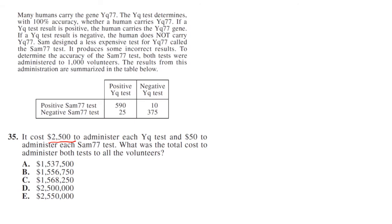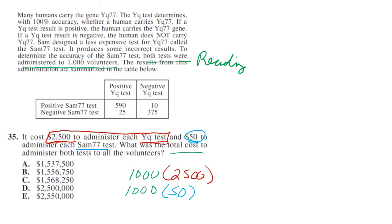It costs $2,500 to administer each YQ test and it costs $50 to administer each Sam77 test. What was the total cost? If we look, we see that both tests were administered to 1,000 volunteers. This is almost just a reading question. If you have 1,000 volunteers and we're administering each test, then we have to do 1,000 times $2,500 for the YQ test and 1,000 times $50 for the Sam77 test. So this equals $2,500,000 and this equals $50,000. We add those two together and we get $2,550,000, choice E.